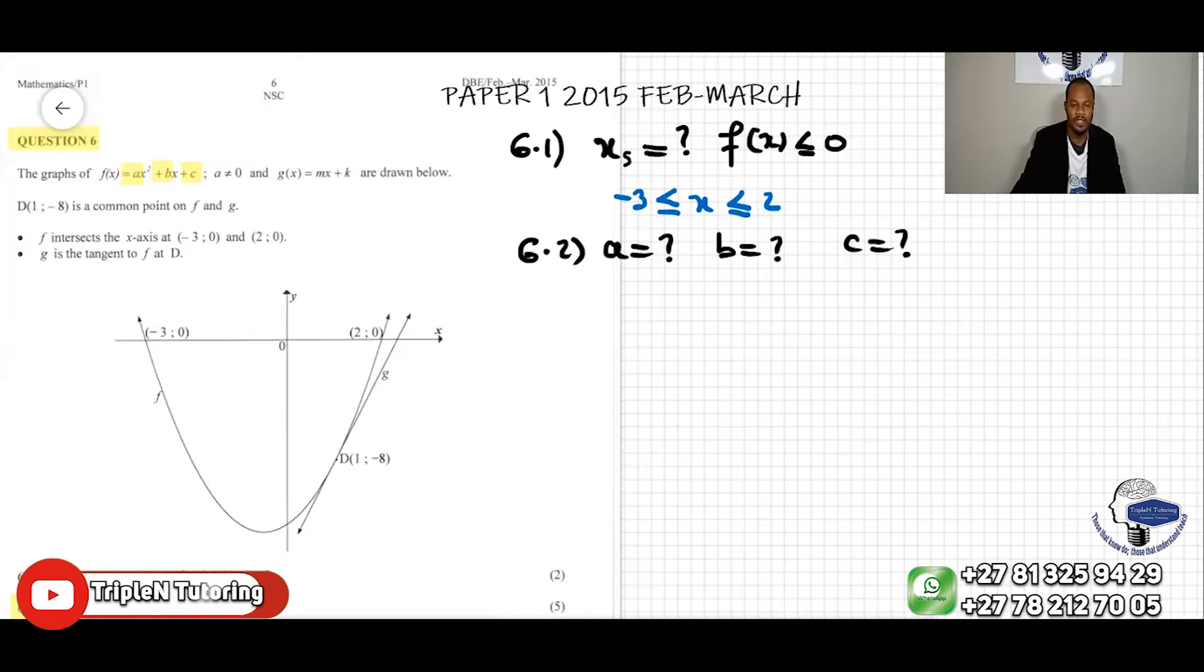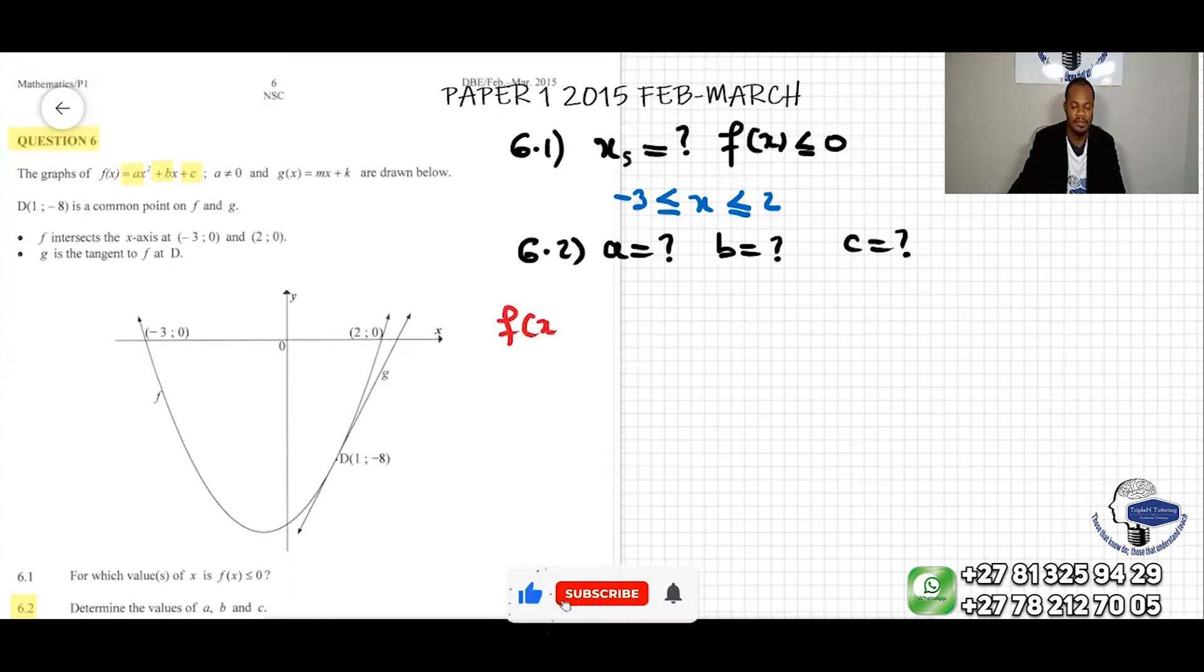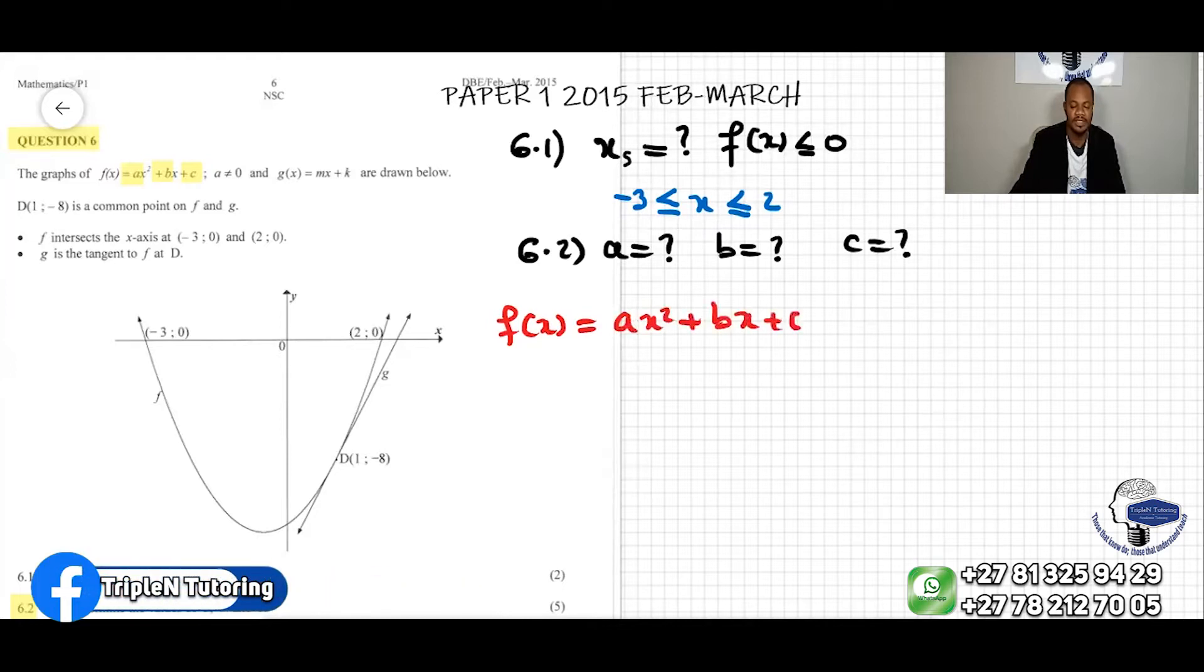First, what do we know about the quadratic equation? We know that f(x) is equal to ax² + bx + c. And this is called the standard form of a quadratic equation.